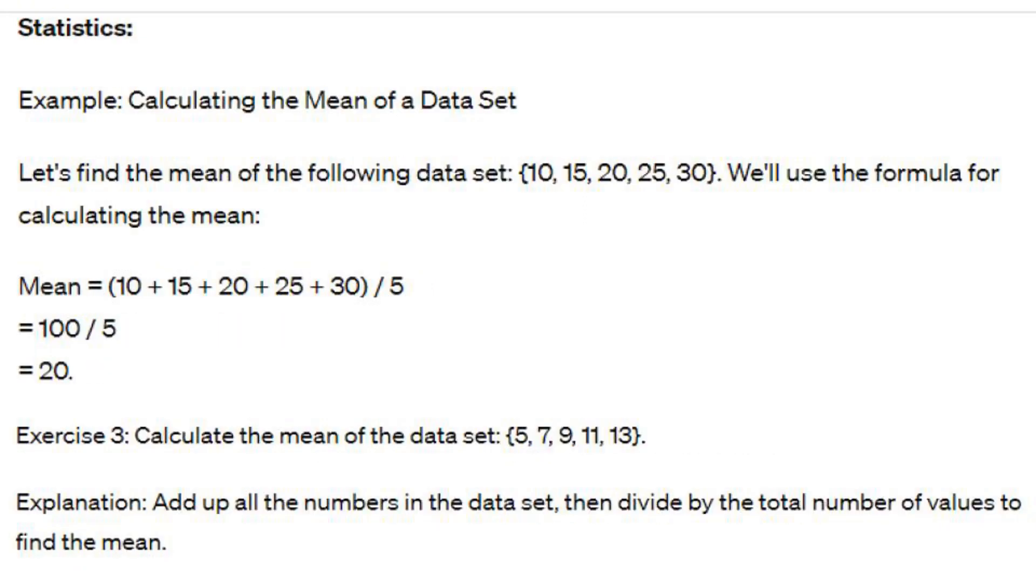Statistics example: Calculating the mean of a data set. Let's find the mean of the following data set: 10, 15, 20, 25, 30. We'll use the formula for calculating the mean. Mean equals 10 plus 15 plus 20 plus 25 plus 30, divided by 5, equals 100 divided by 5, equals 20. Exercise 3: Calculate the mean of the data set 5, 7, 9, 11, 13. Explanation: Add up all the numbers in the data set, then divide by the total number of values to find the mean.